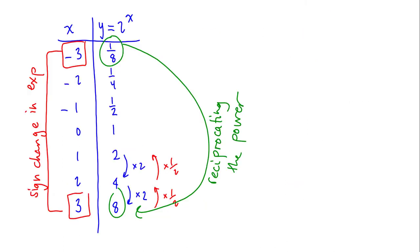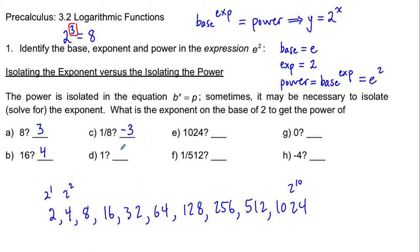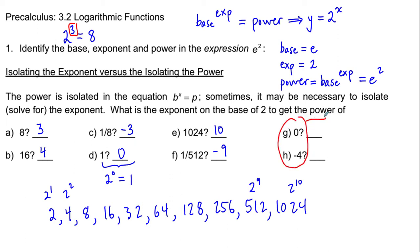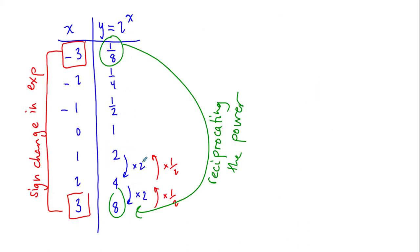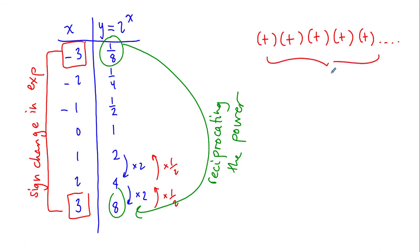From our table of values, what was the exponent that we put on the base of 2 to get the power of 1? The exponent was 0 — we can see that by continuing to multiply by 2 or by a half depending on the direction. We could rewrite this as 2 to the exponent 0 is equal to 1. To get 1024, we put an exponent of 10 on base 2. To get 512, we put an exponent of 9. And to reciprocate, we put an exponent of negative 9.